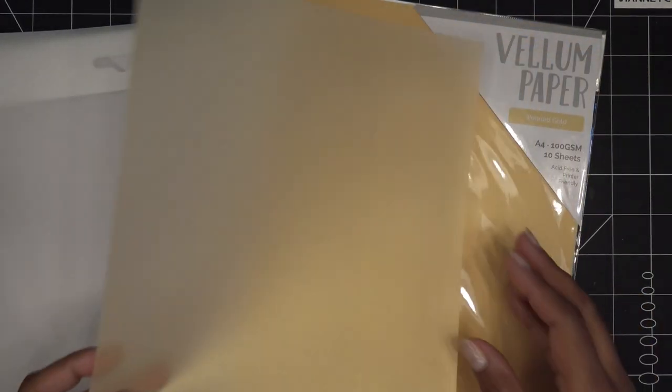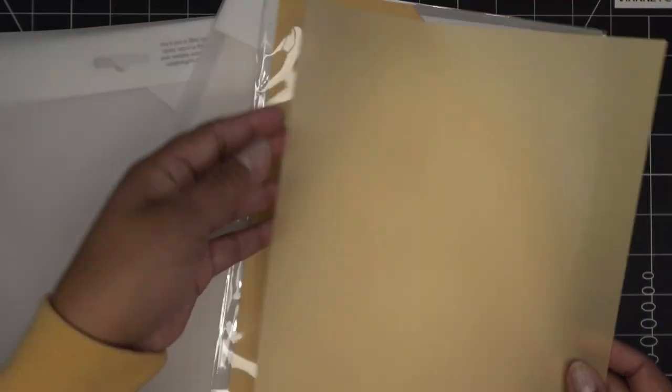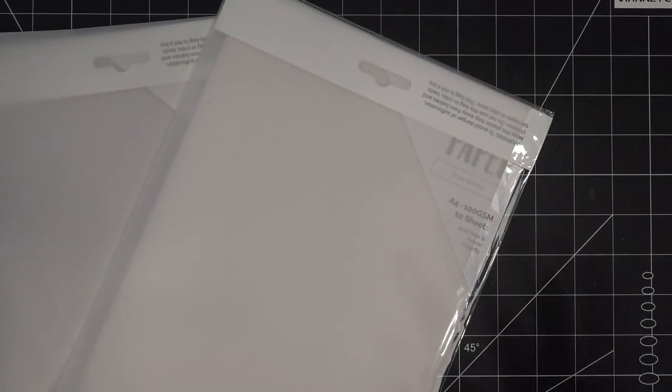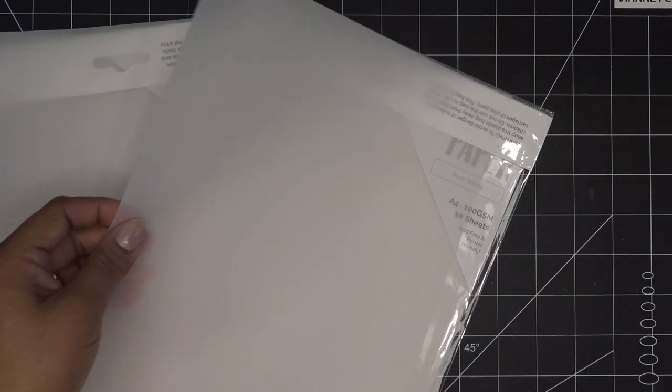This one is the pearled gold. And again, there's that sheen. So that's what I'm trying to catch on here. I'm being very careful with it because I don't want to kink the paper or do anything. Again, pearled gold. This is also 100 GSM. And there are 10 sheets in both of the packs I just showed you. Acid-free and printer-friendly, it says, which is even better.